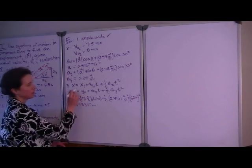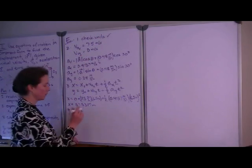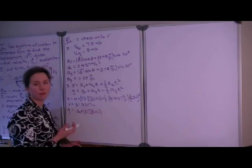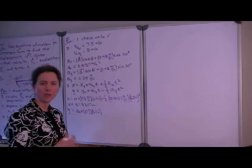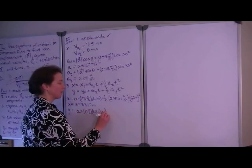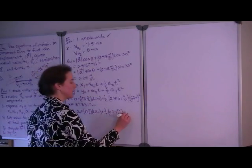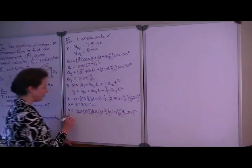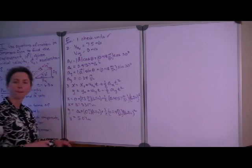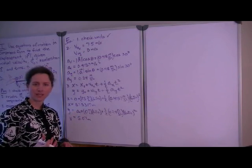Similarly, the y position: the initial y position is also zero. The initial component of velocity in the y direction was also zero. So we have zero meters plus zero meters per second times 6.5 seconds — and I know you might be tempted to skip that term, but it's a good habit so you don't forget terms in problems where it won't be zero — plus one-half times 0.24 meters per second squared times 6.5 seconds squared. Through careful calculation, the y component of the position vector is 5.07 meters. We'll retain extra significant digits until we get to our final answer.